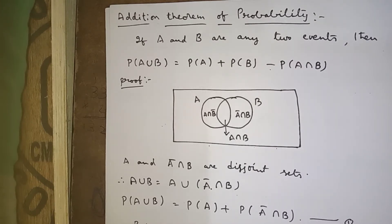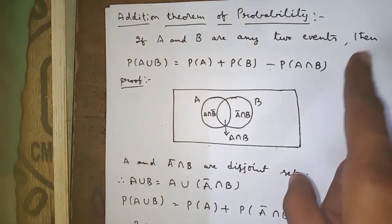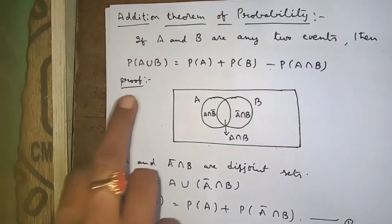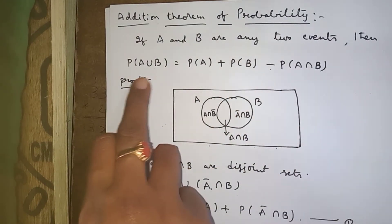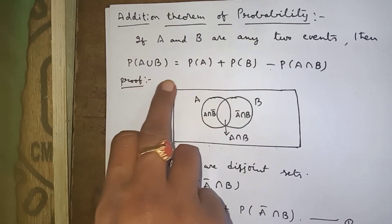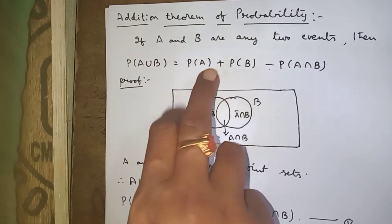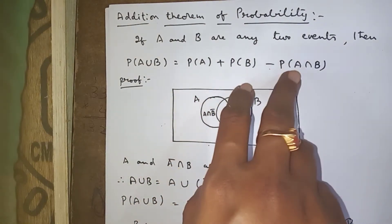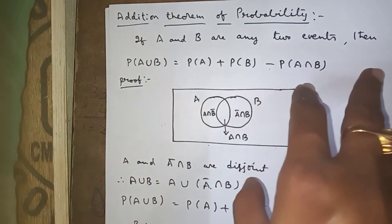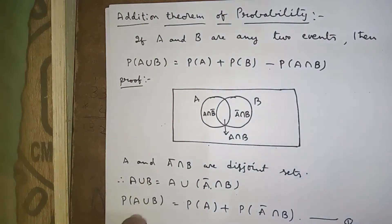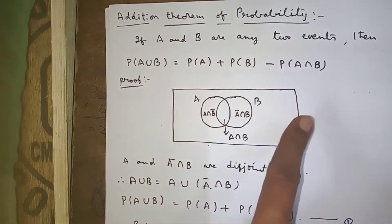The theorem statement is: Addition theorem of probability — if A and B are any two events, then we have to prove that P(A ∪ B) = P(A) + P(B) − P(A ∩ B). To prove this, we will draw one Venn diagram.